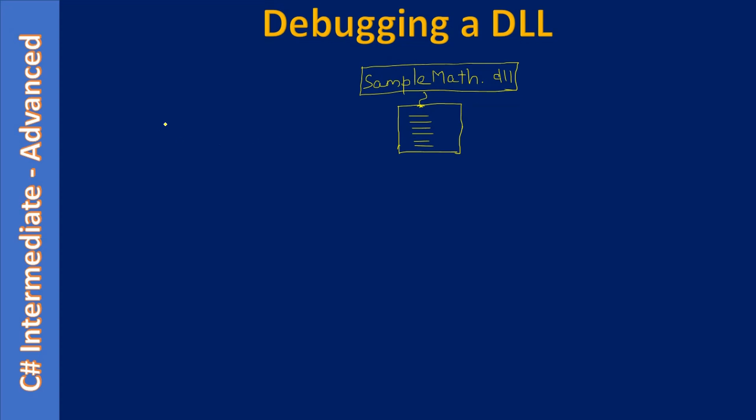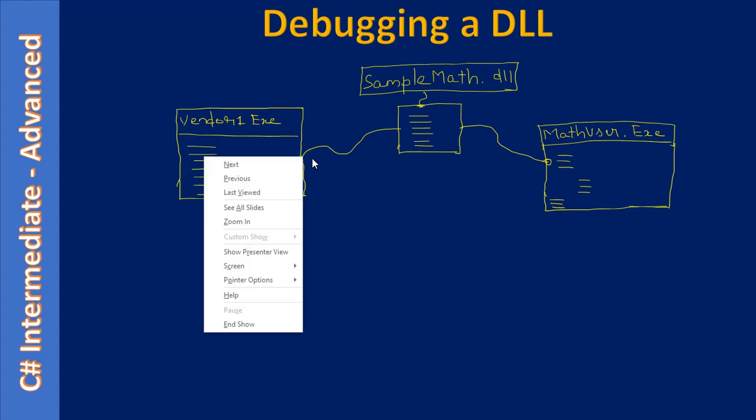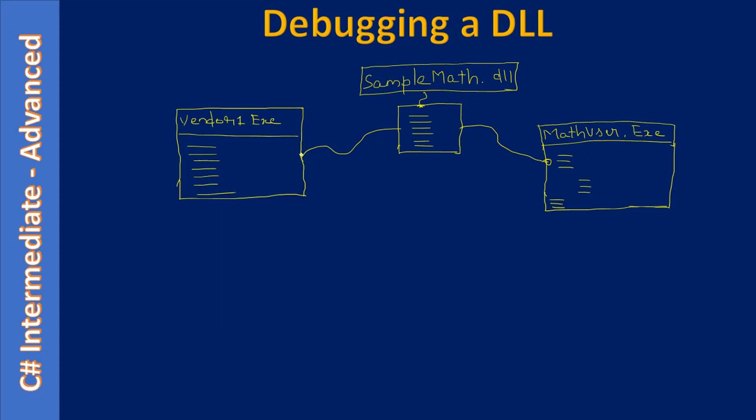Let's assume it has some code. There may be a variety of EXEs - for example, this MathUser.exe is created by us and it consumes SampleMath.dll. Both applications will have their implementation and they both load the DLL. Let's assume both these EXEs are developed by different users - one is a vendor EXE and one is our own EXE. Since both EXEs are consuming the DLL, at runtime it loads the DLL and will have the DLL code in it.